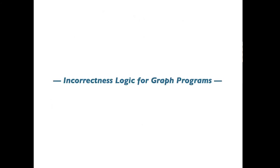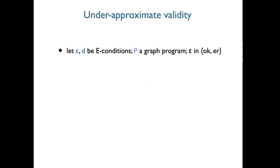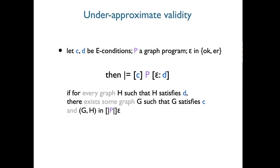Now we have graph programs and assertions. In this context, an incorrectness logic triple is valid if: for every graph H satisfying the result assertion D, there exists some graph G satisfying presumption C such that the pair G, H exists in the semantic function for that exit condition. The emphasis is that we're quantifying over all graphs satisfying the post-assertion — if the triple is valid, we can always find some graph satisfying C that derives H via P. This is quite different from Hoare semantics; it's its dual.